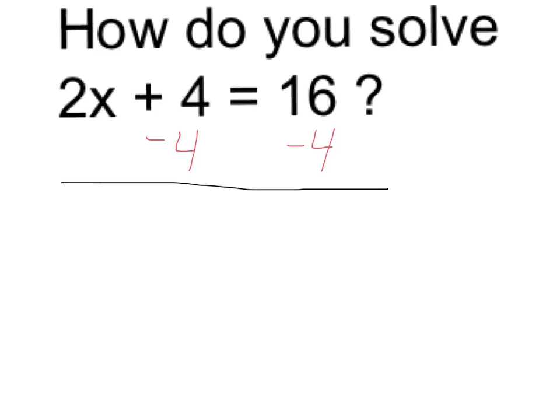So I'm going to start by taking away 4 on the left side, and if I do it on the left side, I also have to do it on the right side. And that leaves me with 2 times x is equal to 12.